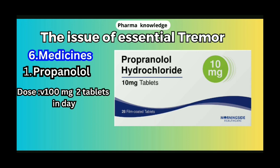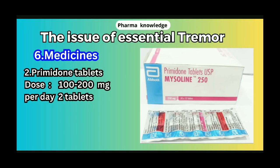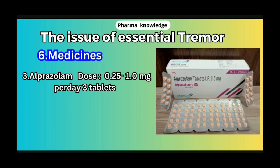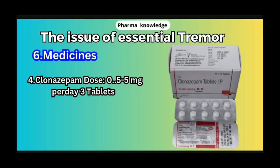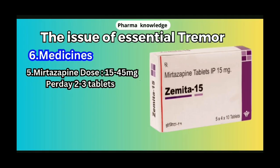Medicines for tremors: 1. Propranolol — tablet dosage not exceeding 160 mg. 2. Primidone — 100 mg per day. 3. Alprazolam — 0.25 to 1 mg per day. 4. Clonazepam — 0.5 to 5 mg per day. 5. Mirtazapine — 15 to 45 mg per day.